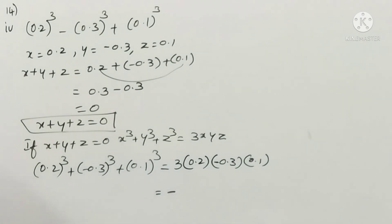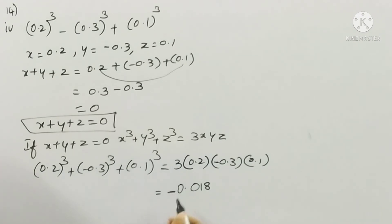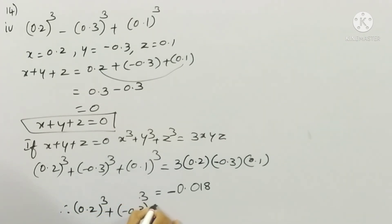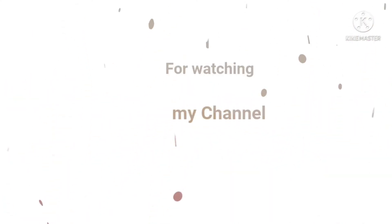One term is negative, so the result is also negative. 3 times 2 is 6, times 3 is 18. Now counting decimal places: 0.2 has 1, minus 0.3 has 1, 0.1 has 1 — that is 3 decimal places total. So we place the decimal point 3 places from the right in 18, giving 0.018. Therefore 0.2 cube minus 0.3 cube plus 0.1 cube equals minus 0.018.